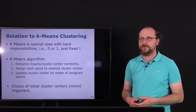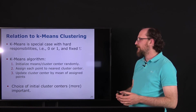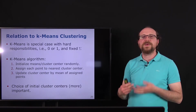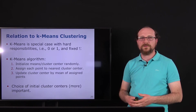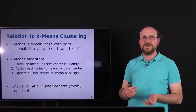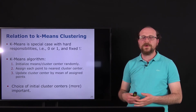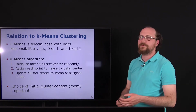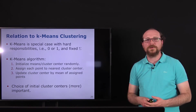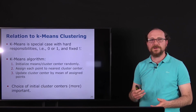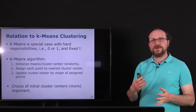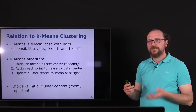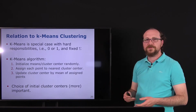One critical aspect — also for the Gaussian Mixture Model — is that the initial cluster centers determine how the clustering will look in the end. A bad initial choice leads to worse results. In K-means, the choice is more critical than with Gaussian Mixture Models because of hard assignments; with soft assignments in GMMs, the model can potentially escape local maxima.